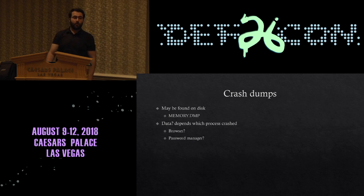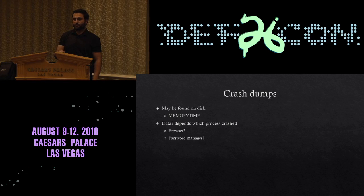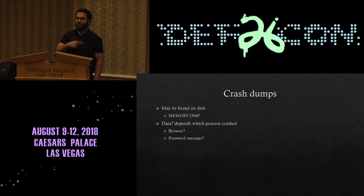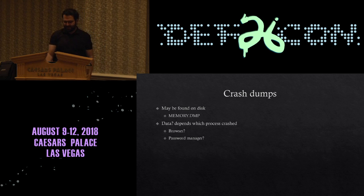Crash dumps — when some software crashes and creates those dump files, that's actually data from memory from that process. It really depends which process crashed. If it's a browser, you might have some data from the cache and information on pages that were open at the time. If it's a miner that crashes the browser, you might have that miner still in memory. And if it's a password manager — I haven't done this research yet, but that could be a next step for any of you: run a password manager, crash it, look at the memory dump, see if there's anything useful in there, because if that's the case, it's definitely worrisome.